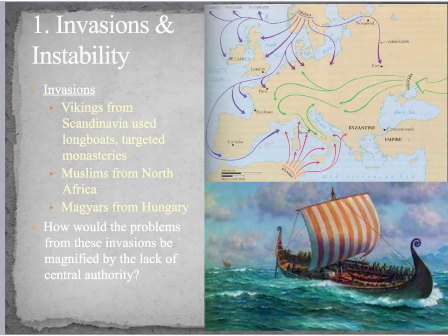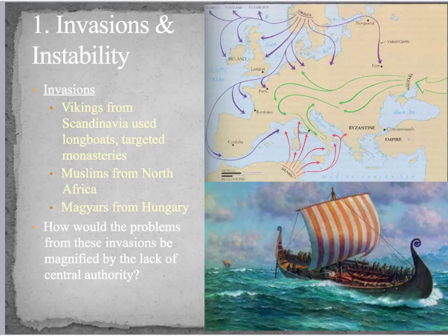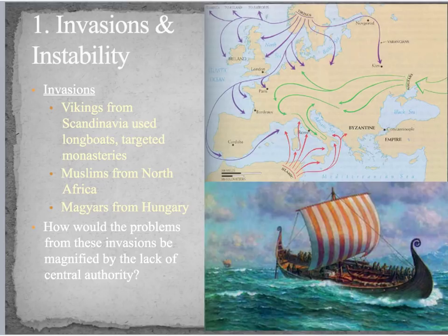The first key concept about medieval Europe is invasions and instability. If you look at the map at the top, you can see that Europe was experiencing invasions by three major groups. The Vikings, who are in purple, came from Scandinavia and especially targeted monasteries and churches because those were centers of wealth. They came down throughout Western Europe and attacked people. They also went eastward past Novgorod and into Kiev, and established the first Russian kingdom, Kievan Rus.